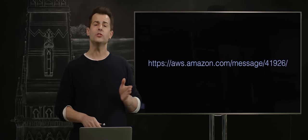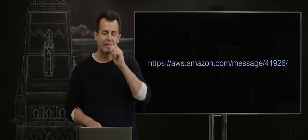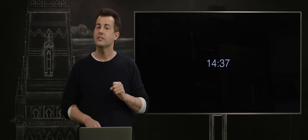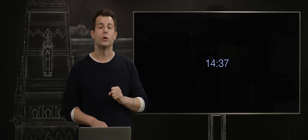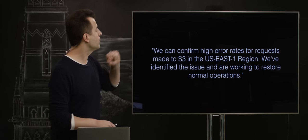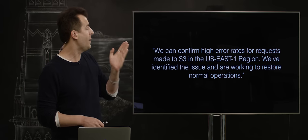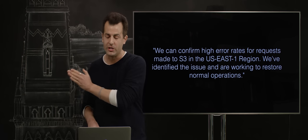In fact, in this case, it means like half of the internet would appear to be down. Now, you can read more on the details of this story, but let's take a look at a few of the key moments. At 2:37 PM Eastern time on February 28th, Amazon reported this: We can confirm high error rates for requests made to S3 in the US East 1 region.